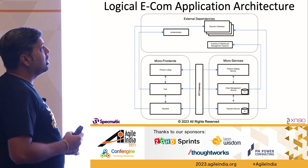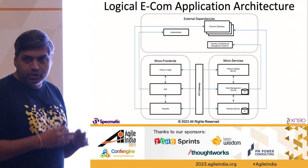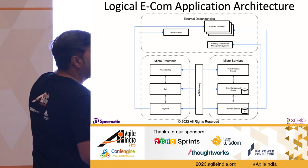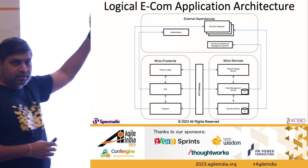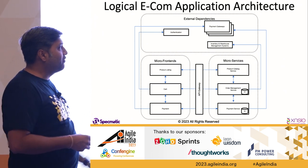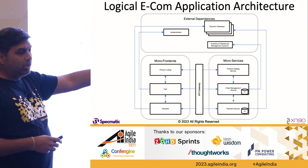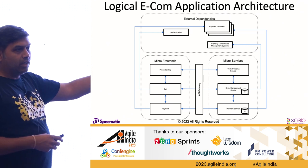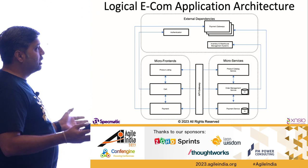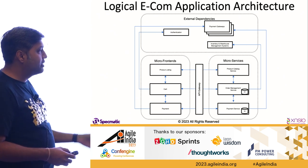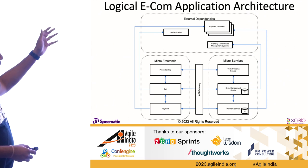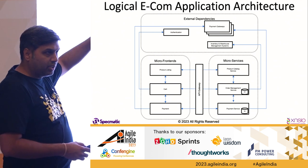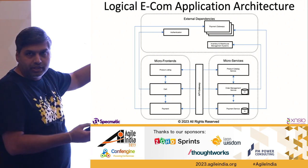This is a typical e-commerce application architecture. You have a bunch of external dependencies like payment gateways, inventory and warehouse management systems, and authentication systems. Then you have a set of microservices: a product catalog service, an order management service, a payment service — and each of them has a respective micro front-end, basically a set of pages that caters to that service.